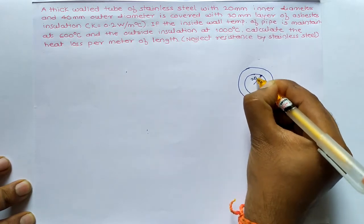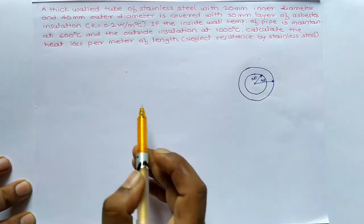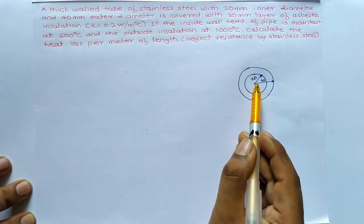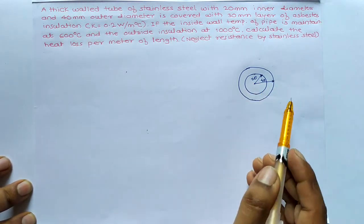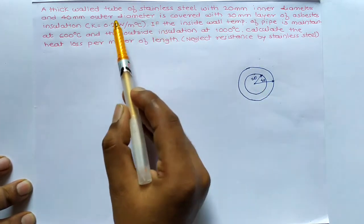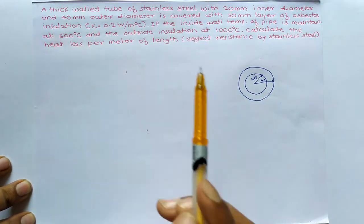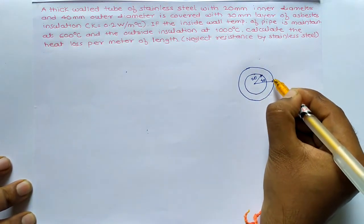This one is 20mm and this one is 40mm. I will plot over here only the values. After that we will find out R1, R2, R3. It is covered with 30mm layer of asbestos insulation. So here it is 30mm layer.